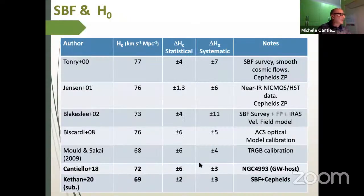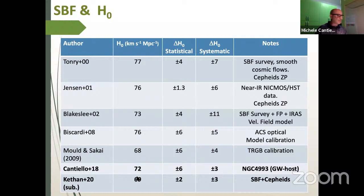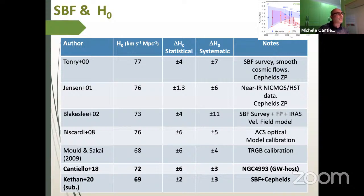Regarding H₀: since this distance indicator can reach quite large distances, I can say something about H₀. There have been several H₀ estimates using this method throughout its history. I want to highlight a recent submission from Khetan et al., which already has a mild referee report. The H₀ value they get is close to 79, which is basically in the middle of the H₀ tension between the Planck value and direct distance-based measurements using supernovae.